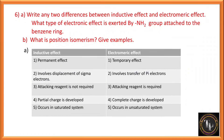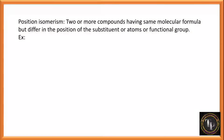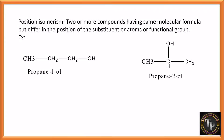What type of electronic effect is exerted by the NH2 group attached to a benzene ring? NH2 is an electron donating group because it has a lone pair of electrons. An electron donating group on benzene shows a positive resonance effect. What is position isomerism? Two or more compounds having the same molecular formula but differing in the position of the substituent, atom, or functional group. Example: propan-1-ol and propan-2-ol have the same molecular formula and functional group, but the OH group is at different positions — first and second — so they are position isomers.